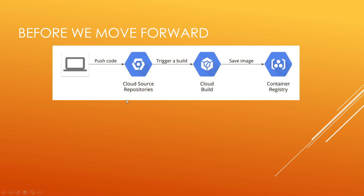There are a few things that we need to know. This is a very basic architecture of how things are going to flow in this project. We're going to write some code in Python — a very basic code — and then push it into Cloud Source Repositories. That is going to trigger a build. We're going to create a trigger that will go to Cloud Build, and that will save a Docker image in Container Registry.